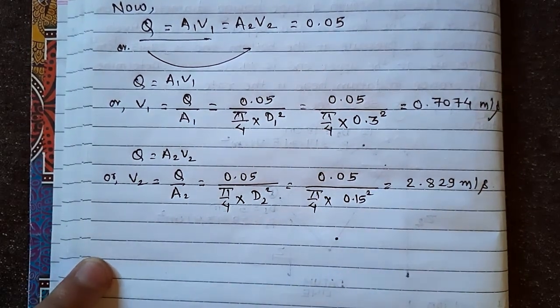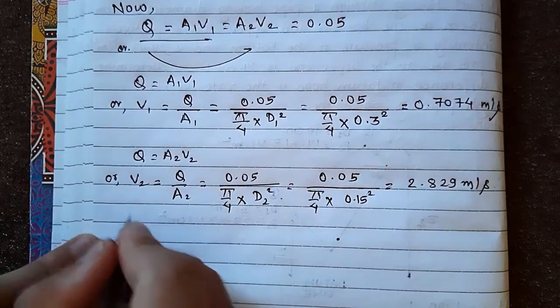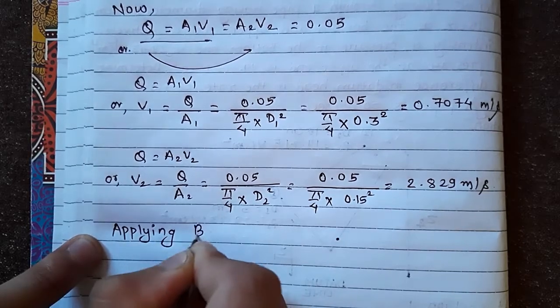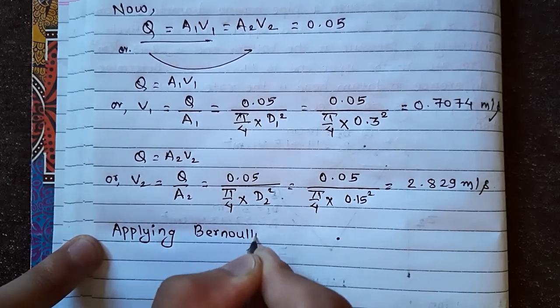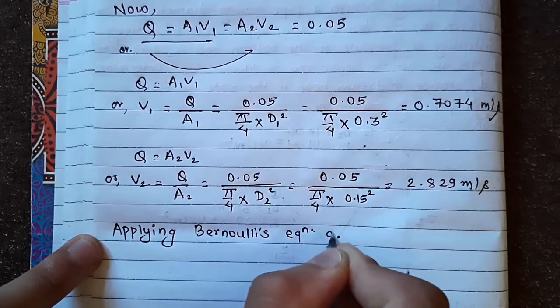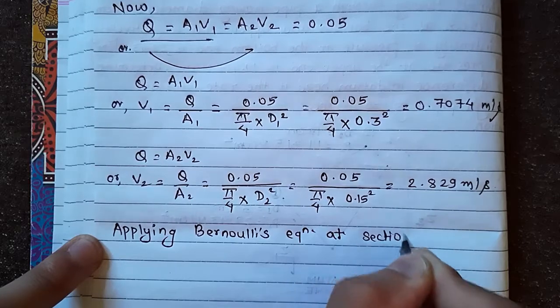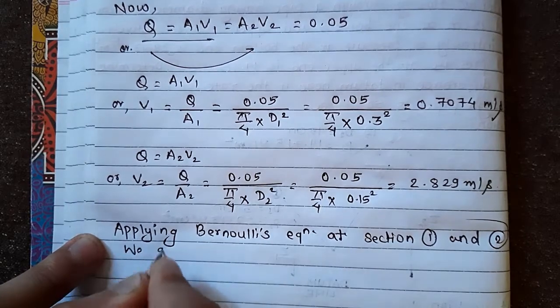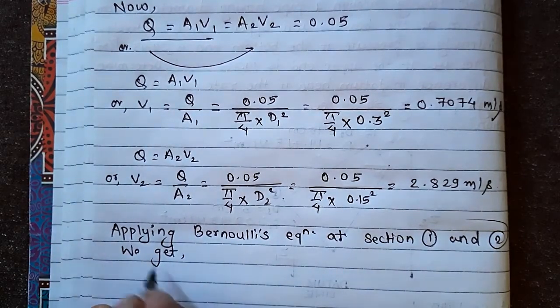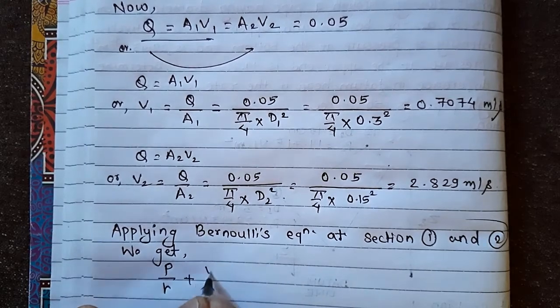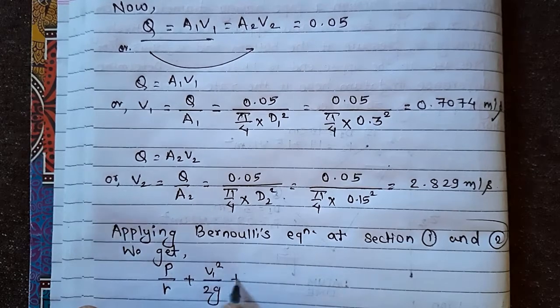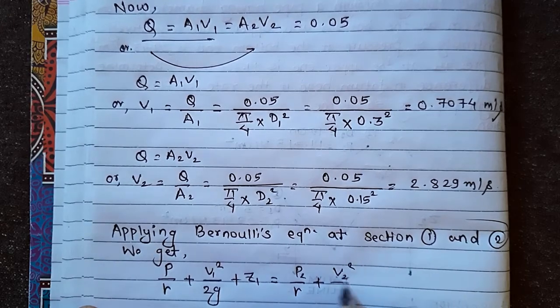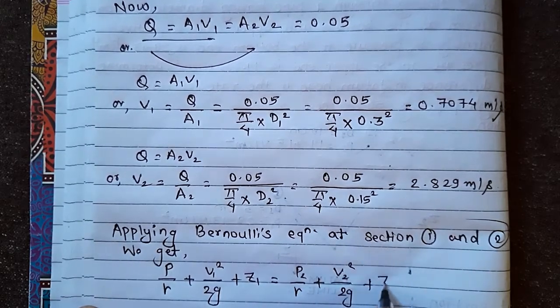Now Bernoulli's equation apply at section 1 and 2. We are applying Bernoulli's equation at section 1 and 2. We get P₁/γ + V₁²/2g + Z₁ equals to P₂/γ + V₂²/2g + Z₂.